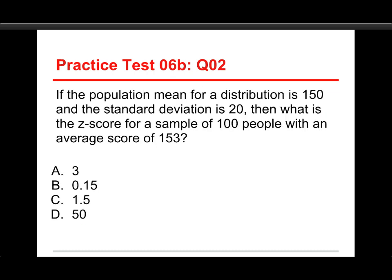The second question is: if the population mean for a distribution is 150 and the standard deviation is 20, what is the z-score for a sample of 100 people with an average score of 153? The choices are A, 3; B, 0.15; C, 1.5; and D, 50. The answer is C, 1.5.